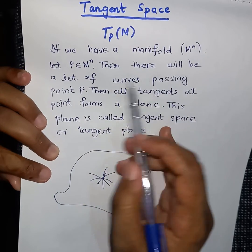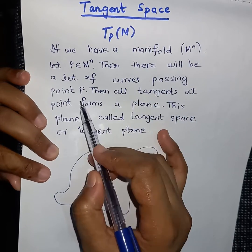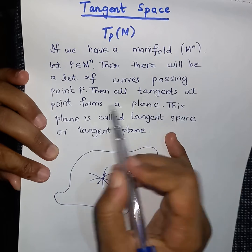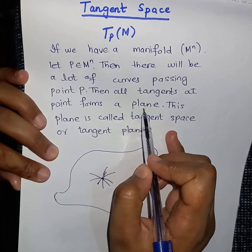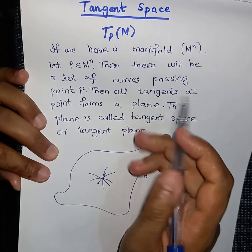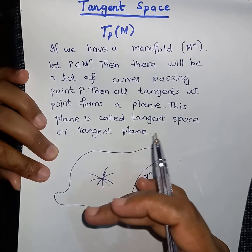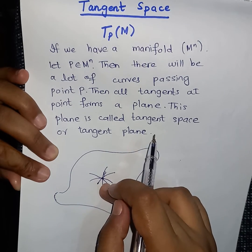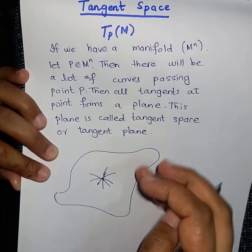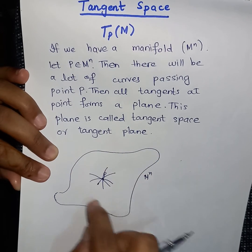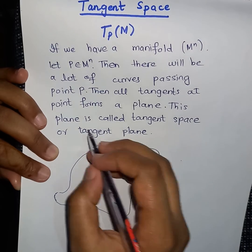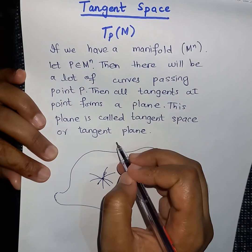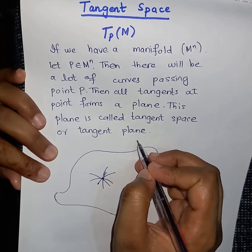Then there will be a lot of tangents at the point p. All of these tangents form a plane, and this plane is called the tangent space or tangent plane.